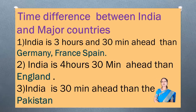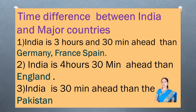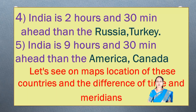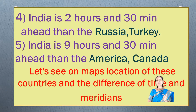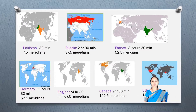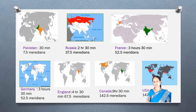Time difference between India and major countries: India is 3 hours 30 minutes ahead of Germany and France. India is 4 hours 30 minutes ahead of England. India is 30 minutes ahead of Pakistan. India is 2 hours 30 minutes ahead of Russia and Turkey. India is 9 hours 30 minutes ahead of America and Canada. Let's see on the map the location of these countries and the difference of time and meridians. First we have Pakistan — 30 minutes difference, 7.5 meridians.